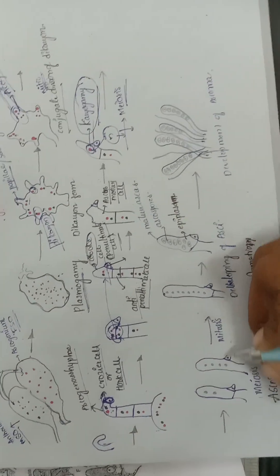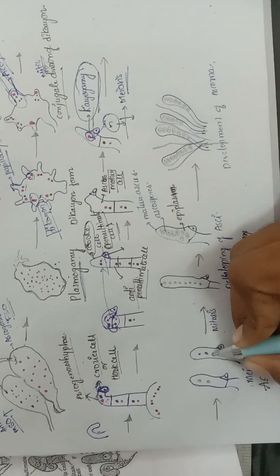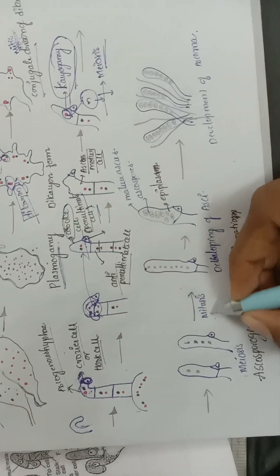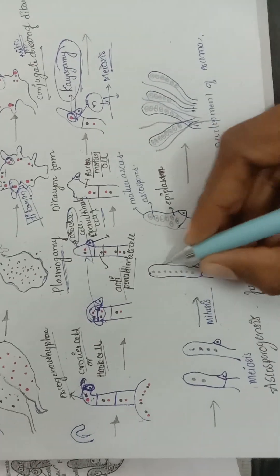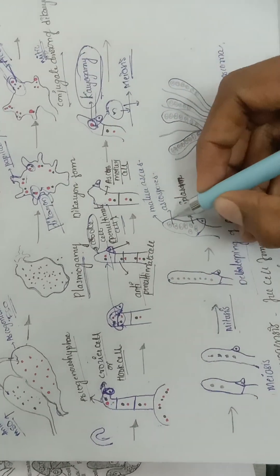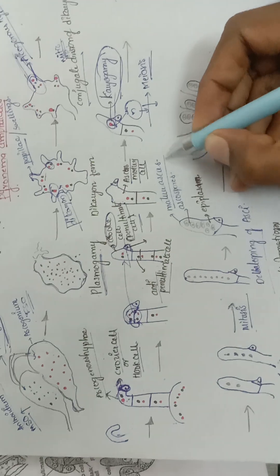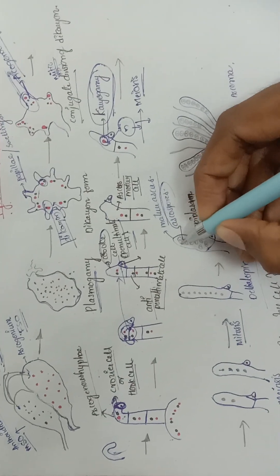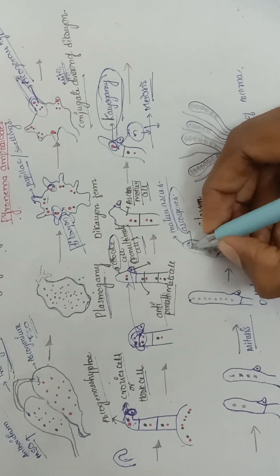Produce four nuclei. These four nuclei then undergo mitotic division to produce eight cells. These eight cells mature into ascospores through free nuclear division and cell wall formation.